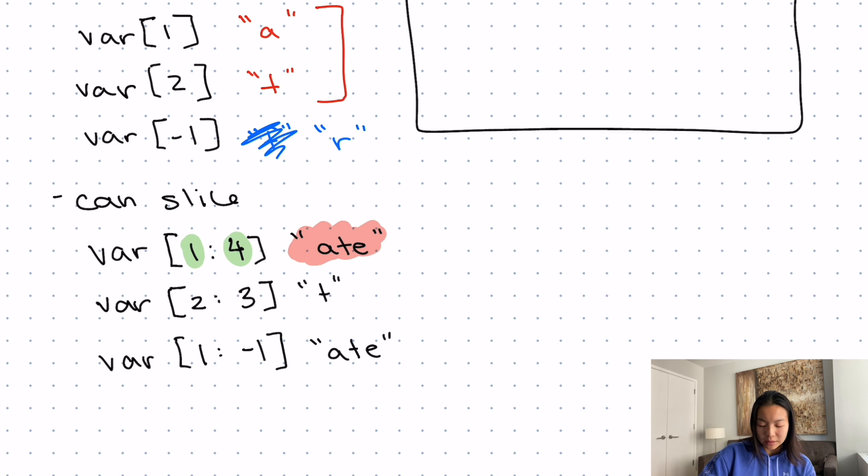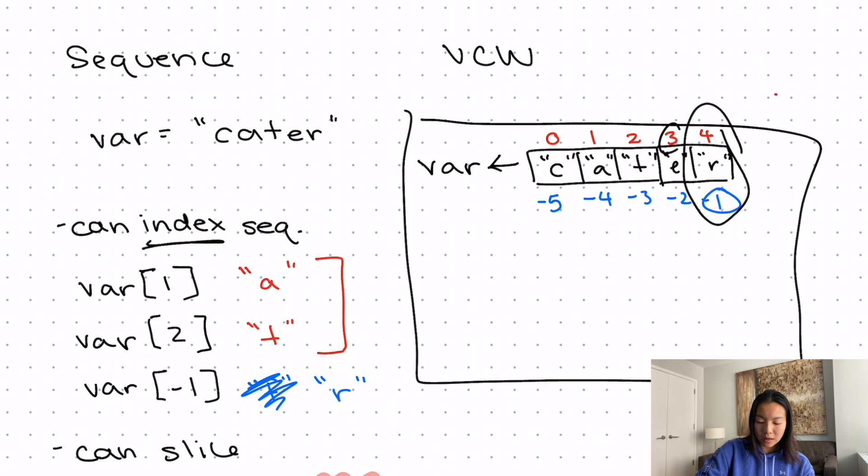And you can also leave off. So if you want to start from the beginning, then you can say var, and just leave the first thing blank, and just go semicolon to three. And what that does is it says, find three and take everything to the left of that. So this would return cat.